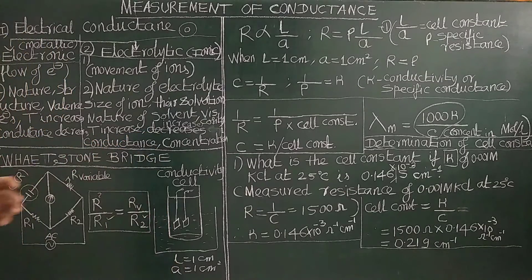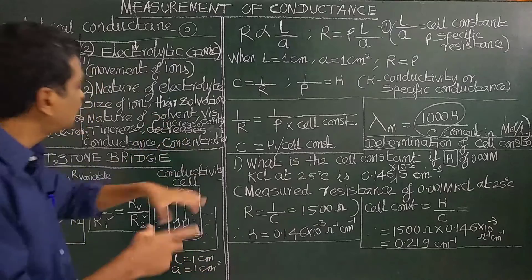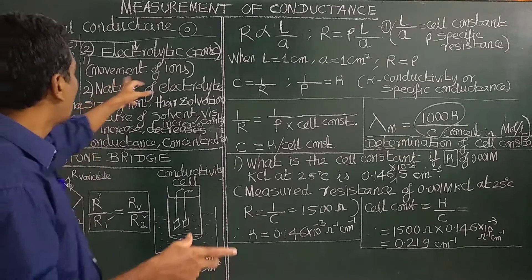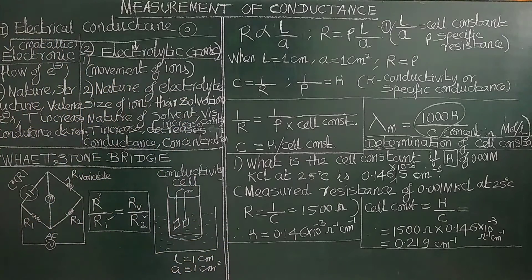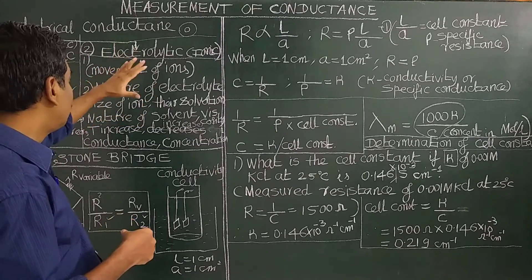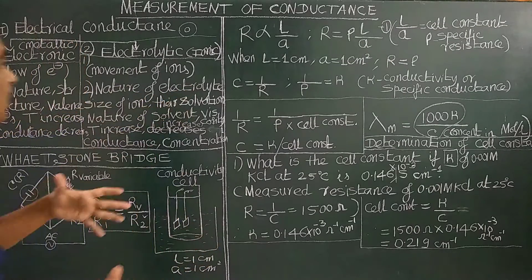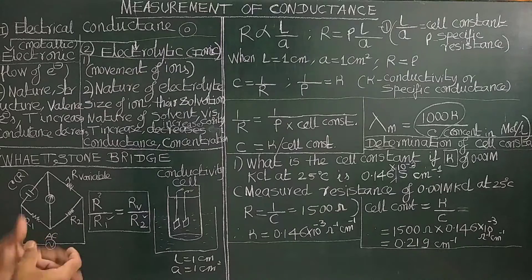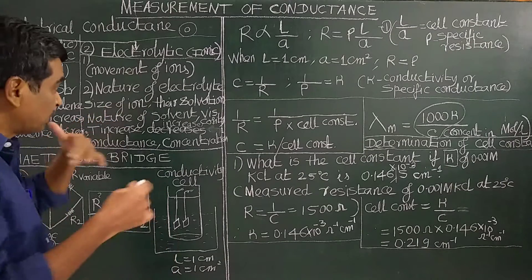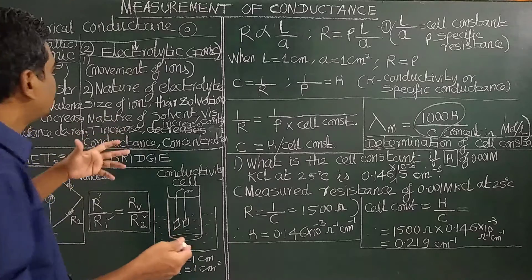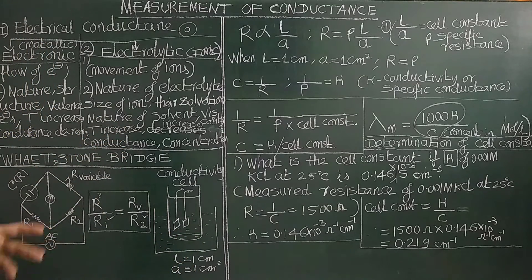In the case of electrolytic conductance, when temperature increases, the conductance also increases because the kinetic energy of the ions increases. The factors that affect electrolytic conductance include the nature of the electrolyte — strong electrolytes have greater conductance. For example, HCl is highly conducting, whereas acetic acid is a weak electrolyte and is poorly conducting because its degree of dissociation is less.